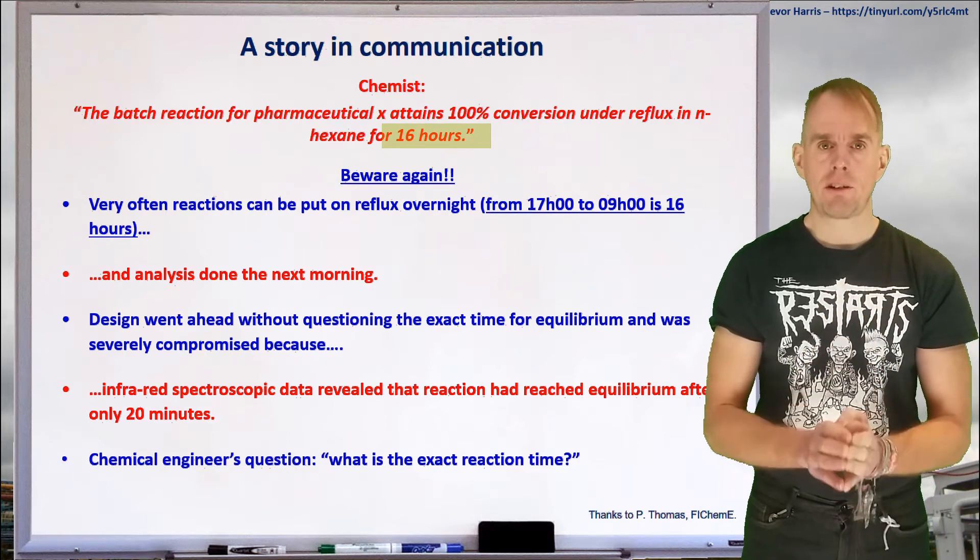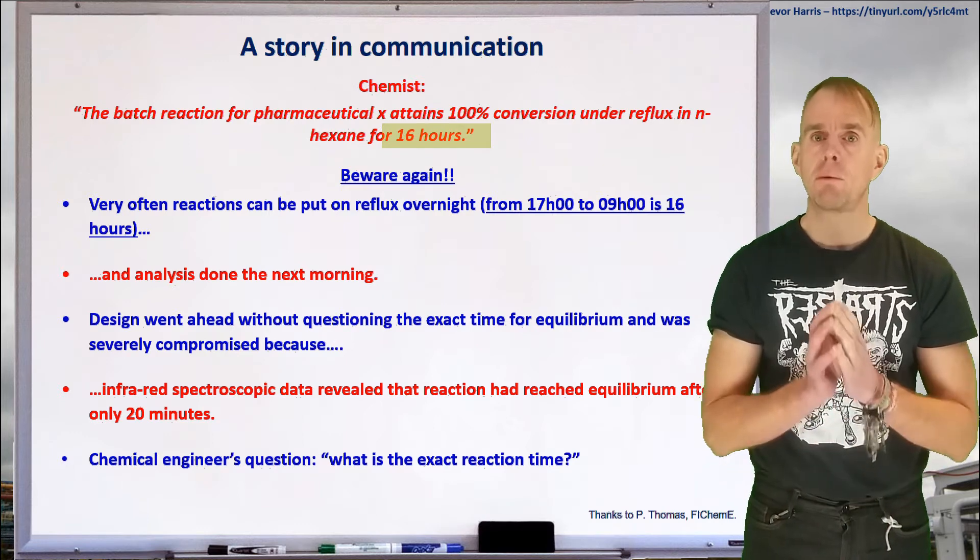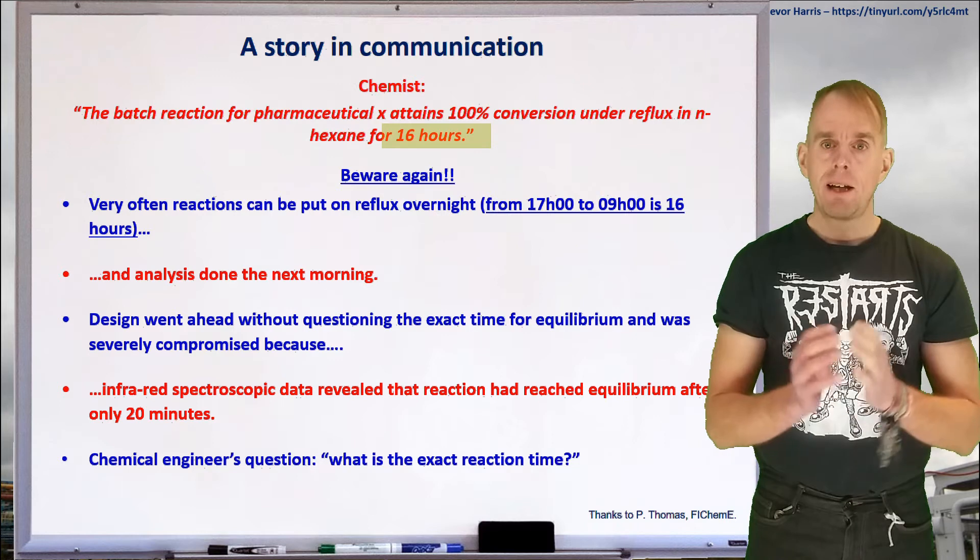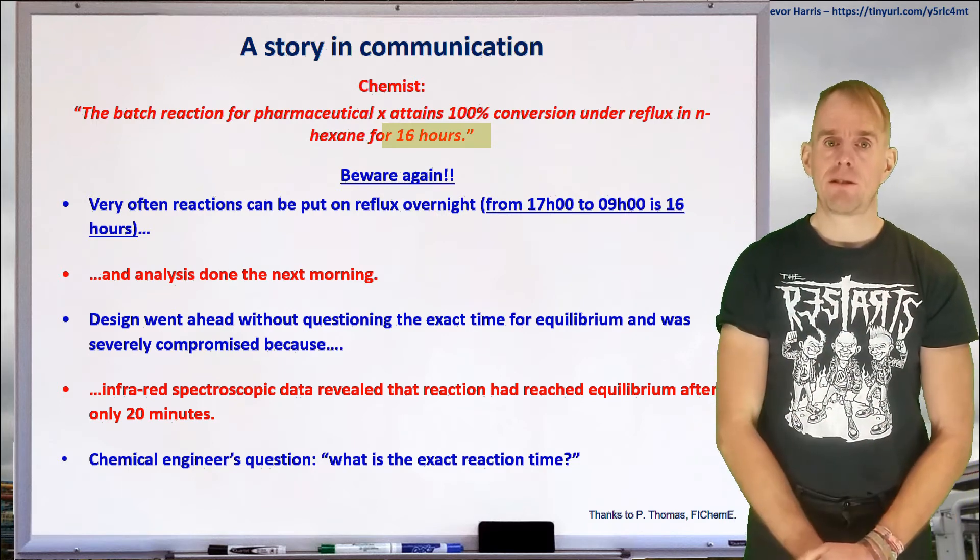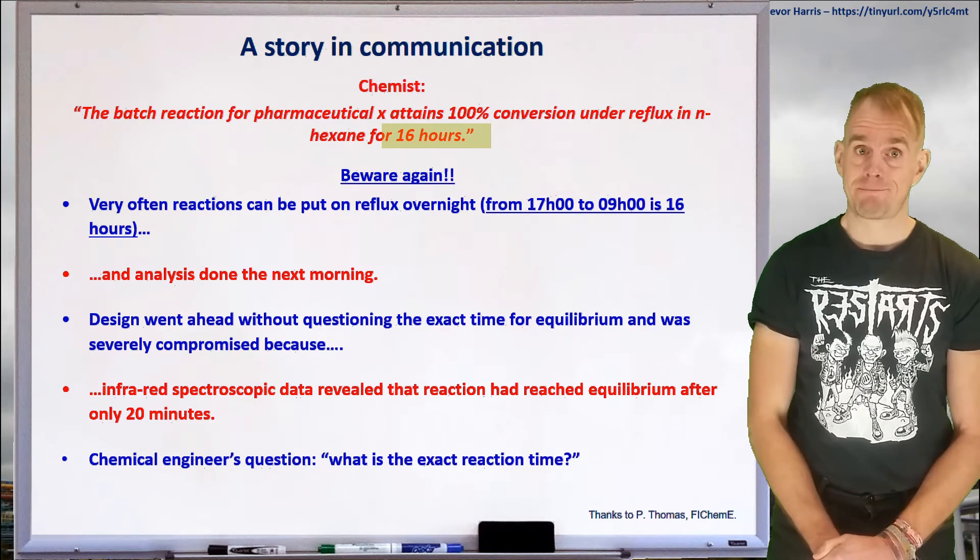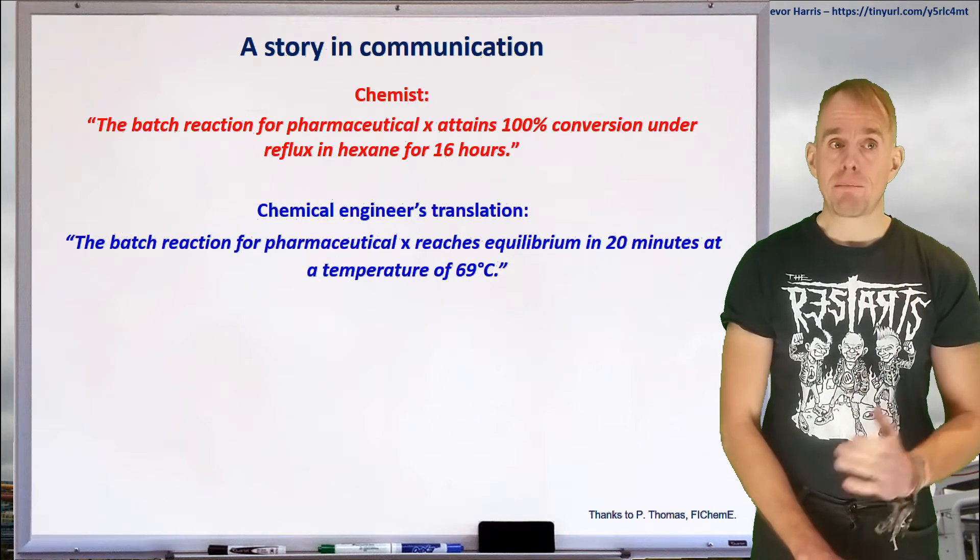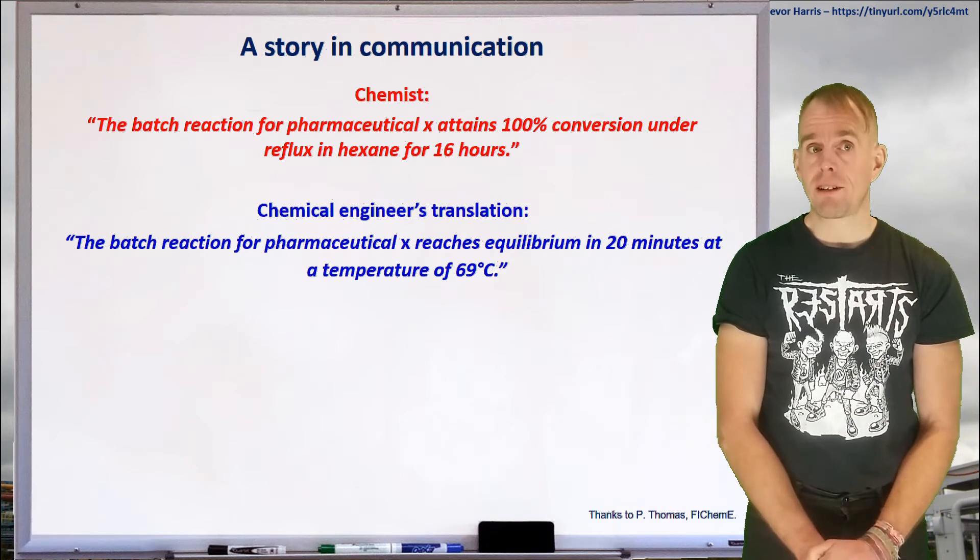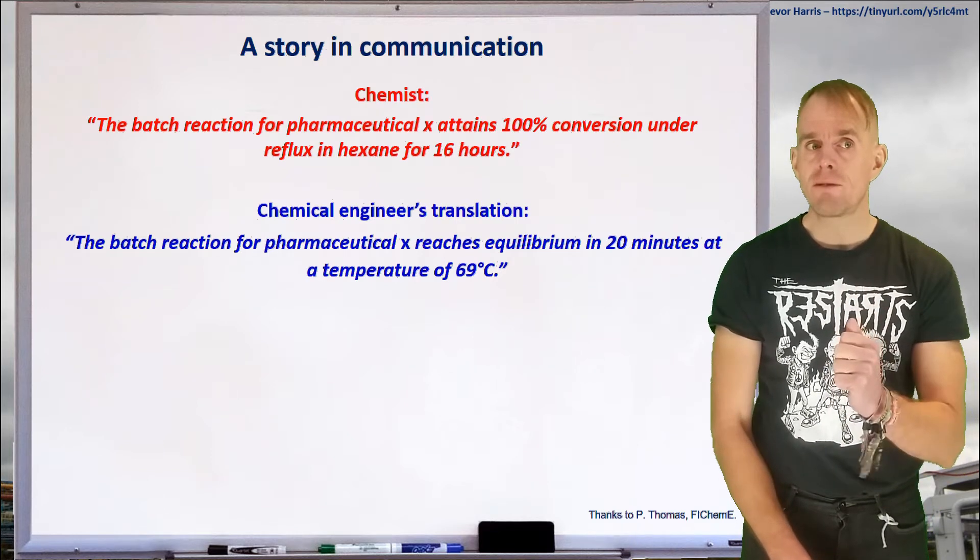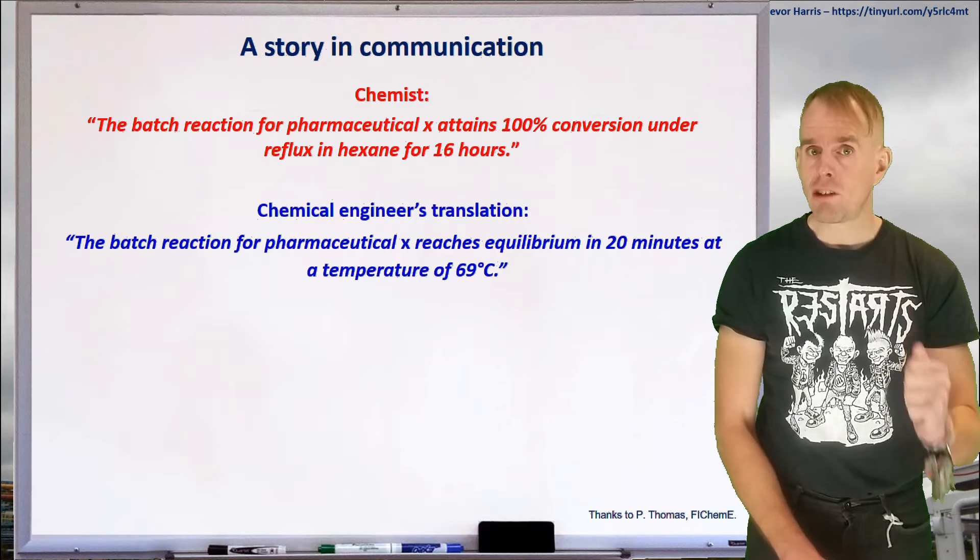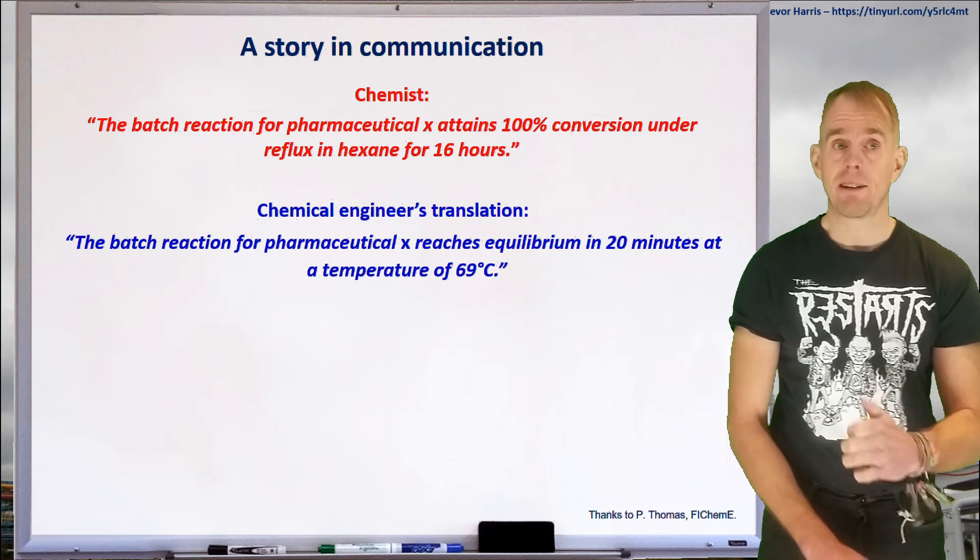When you communicate with other disciplines, you have to understand where they're coming from and, likewise, they have to understand where you are coming from. Ineffective communication at the most basic level can lead to great problems when it comes to design. So, the chemist's statement is the batch reaction for pharmaceutical X attains 100% conversion under reflux in hexane for 16 hours. The chemical engineer's translation of this is the batch reaction for pharmaceutical X, which reaches equilibrium in 20 minutes at a temperature of 69 degrees C. Don't forget that.